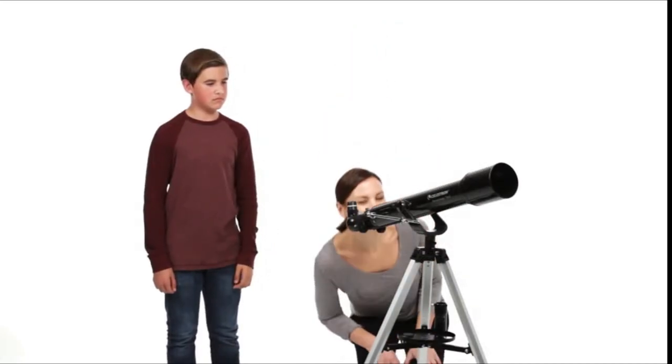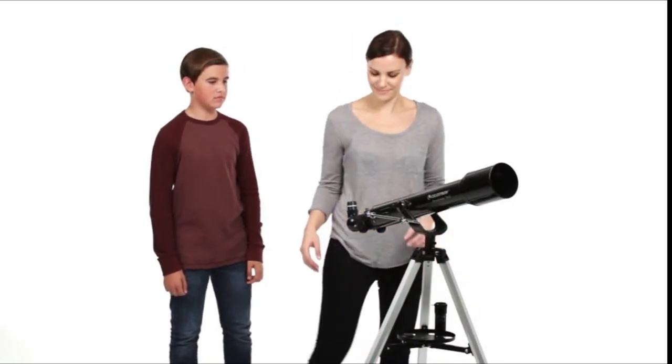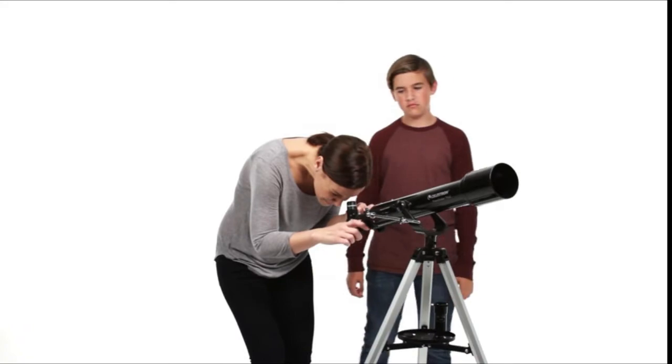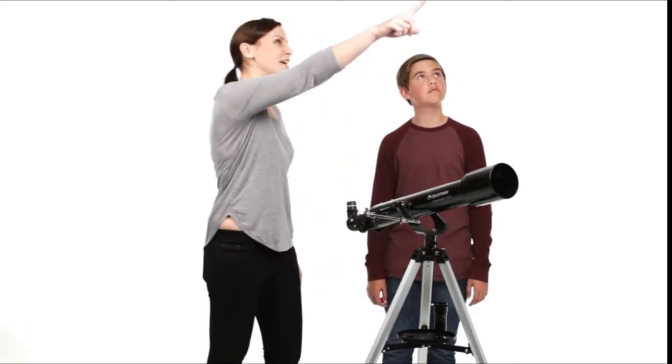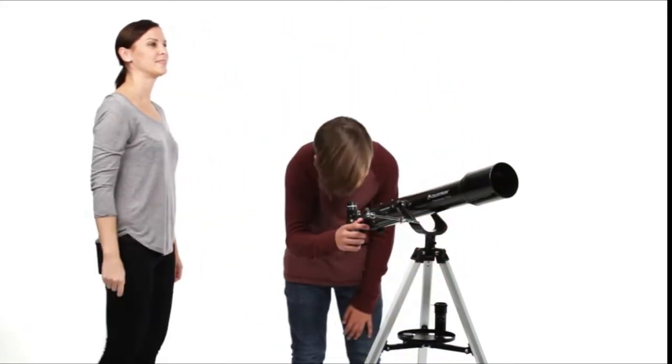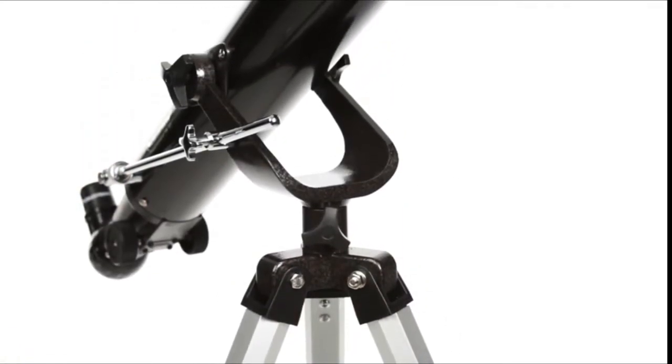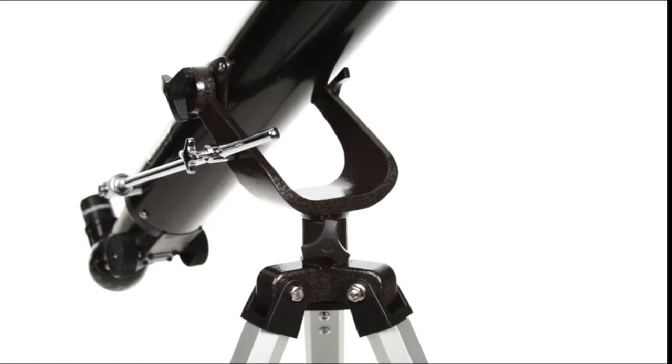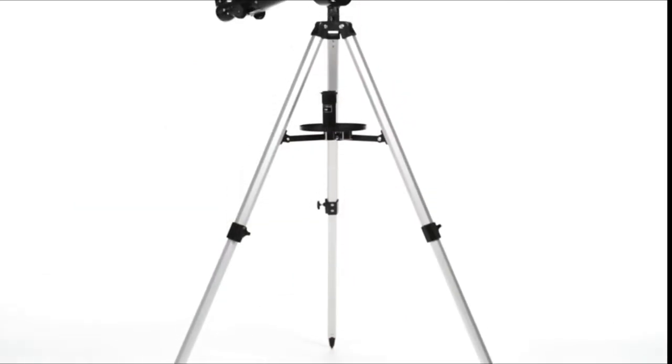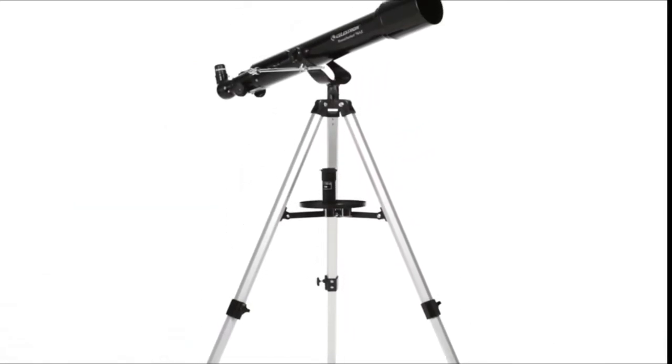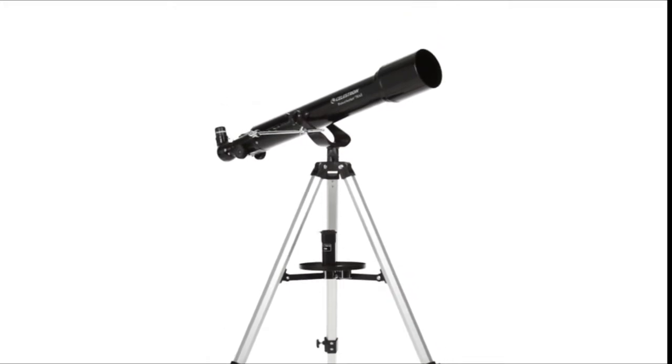Center the object in the finder scope and it's ready to view. A larger model will provide more detailed views and help you enjoy fainter deep-sky objects like star clusters and nebulae. Plus, an Alt-Azimuth mount and correctly-oriented images allow you to enjoy your PowerSeeker telescope during the day. Bring it along on your next camping trip to view landscapes, wildlife, and more.